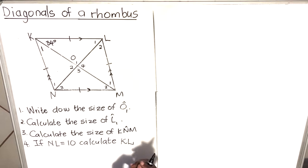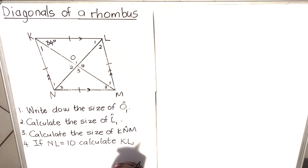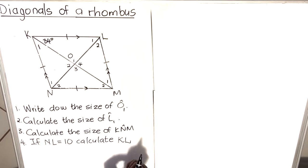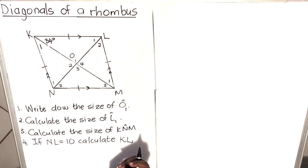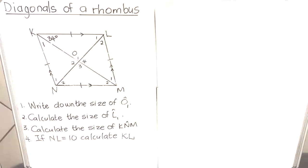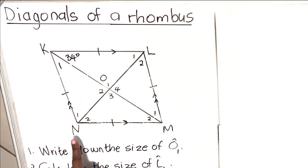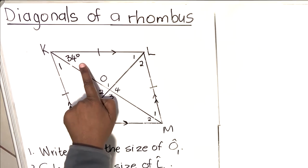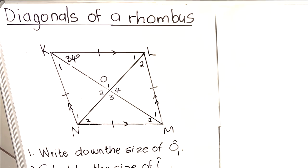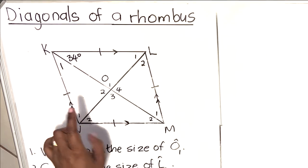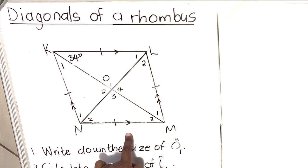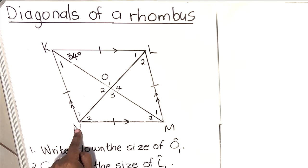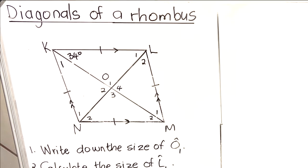Hello everyone. In this video I'm going to show you how we apply the theorems of diagonals of a rhombus. We've extracted a previous paper and we'll deal with how questions are asked and how to answer them. We are given KLMN, which is a rhombus, with angle K2 equal to 34 degrees. The properties of a rhombus are that all sides are equal, opposite sides are parallel, and the diagonals bisect each other at 90 degrees — meaning MO equals OL.